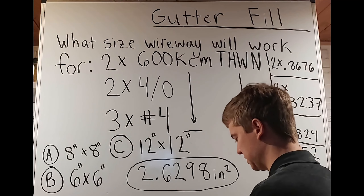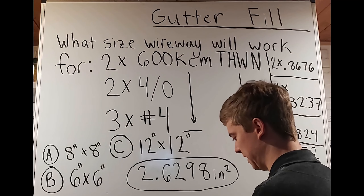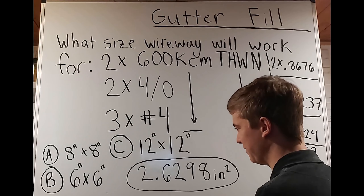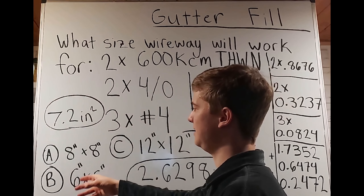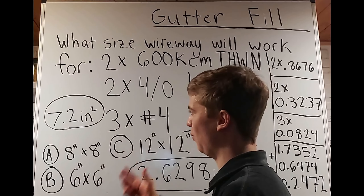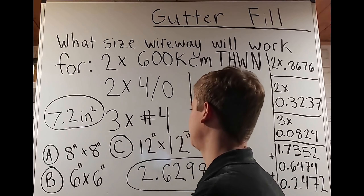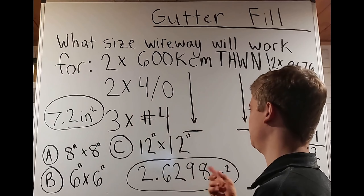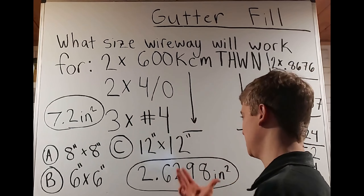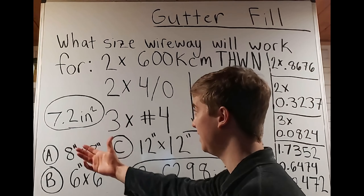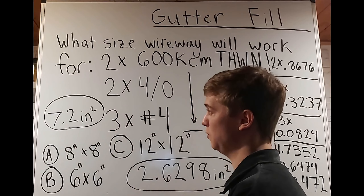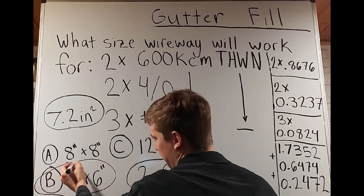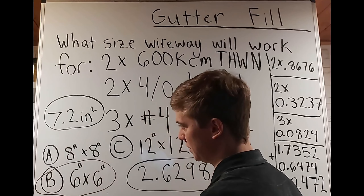Now we want to fit 2.6298 square inches into one of the choices. Starting with the smallest: 6 times 6 equals 36, times 0.2 gives us 7.2 square inches available. Since 2.6298 is well under 7.2, it fits with room to spare. The answer is B — the 6-inch by 6-inch wireway — and we'd still be able to fit more conductors in there if needed.